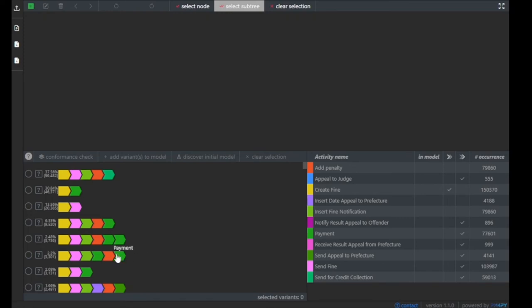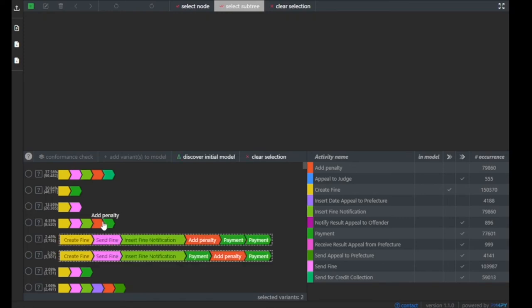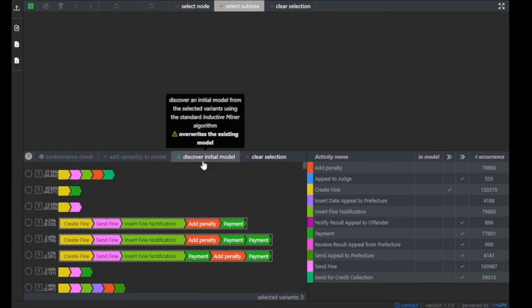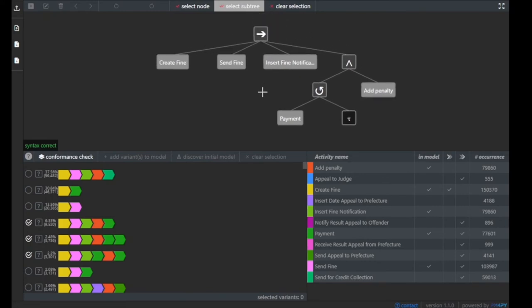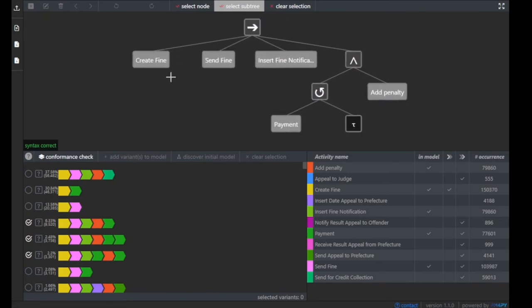How does it work now? A user selects multiple variants initially that he or she would like to incorporate into an initial model. Let's say we want to have these three variants and we press discover an initial model. We see now this initial model here at the top, which says first create fine has to be executed, then send fine, then insert fine notification.